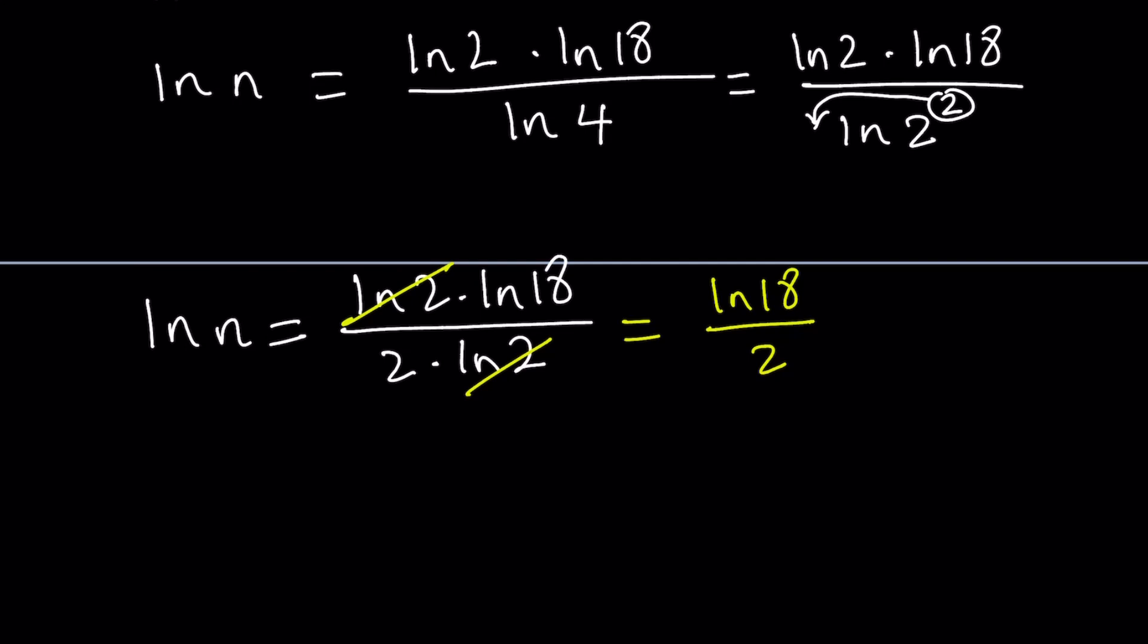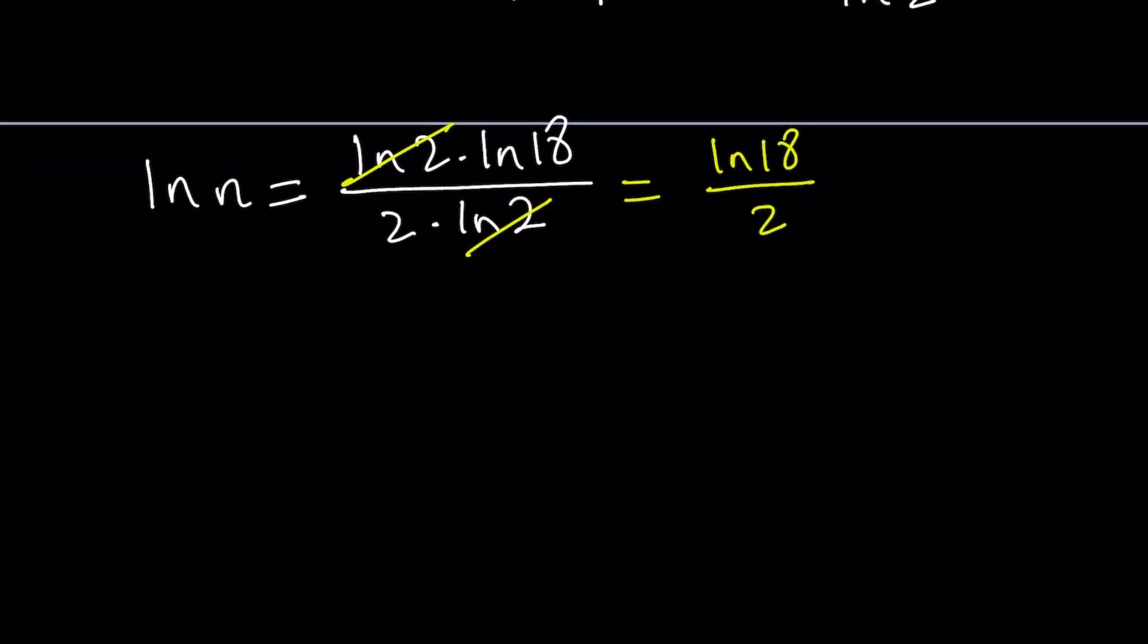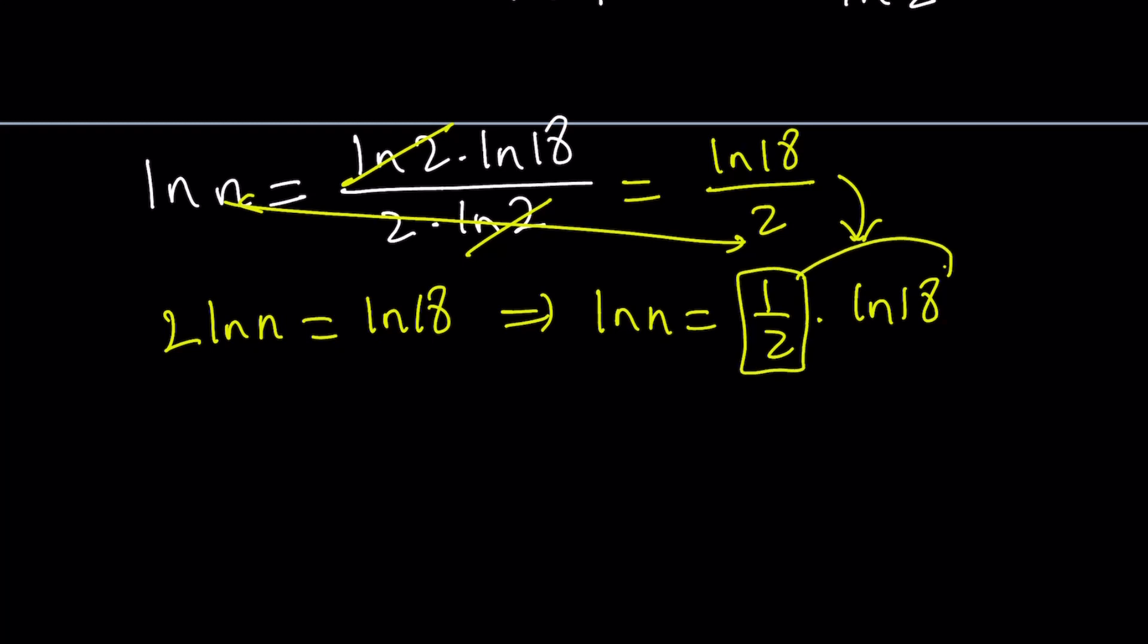You can write the division by 2 as 1 half and then go from there, or you can cross-multiply. If you multiply like this, we get 2 ln n equals ln 18. From here, you can write ln n equals 1 half times ln 18. Our goal is to get an ln on both sides, but we don't want any coefficients. So 1 half needs to go. Let's put it up here as an exponent.